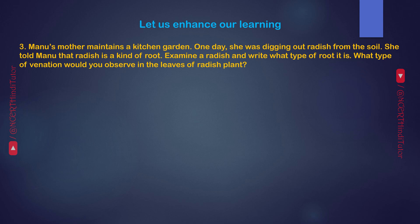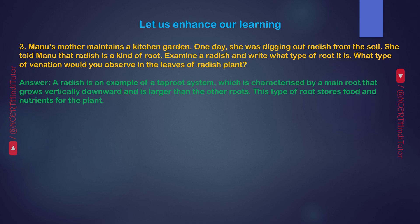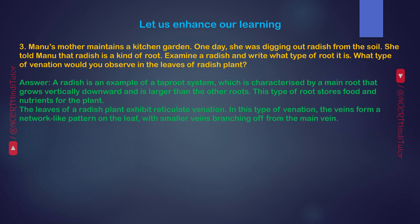Question 3. Manu's mother maintains a kitchen garden. One day, she was digging out radish from the soil. She told Manu that radish is a kind of root. Examine a radish and write what type of root it is. What type of venation would you observe in the leaves of the radish plant? Answer: A radish is an example of a tap root system, characterized by a main root that grows vertically downward and is larger than the other roots. This type of root stores food and nutrients for the plant. The leaves of a radish plant exhibit reticulate venation, where the veins form a network-like pattern with smaller veins branching off from the main vein.